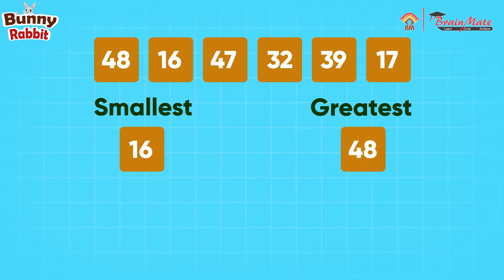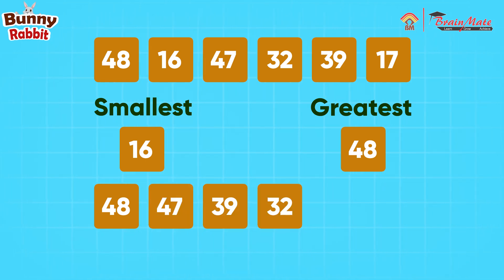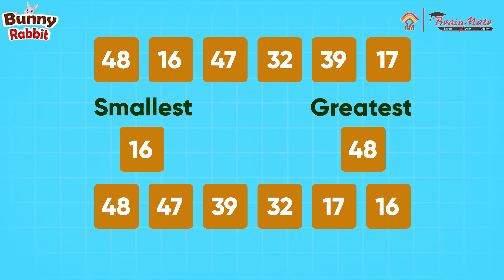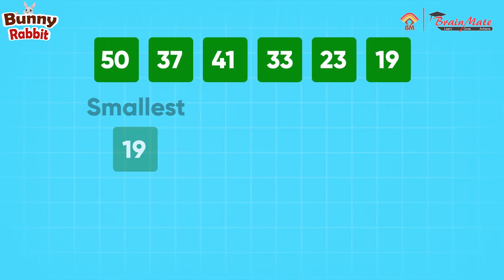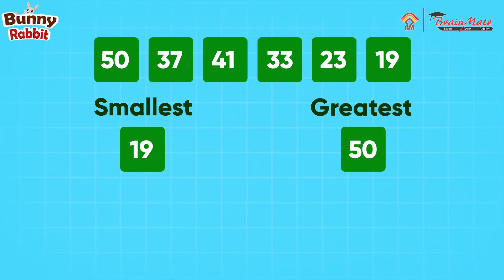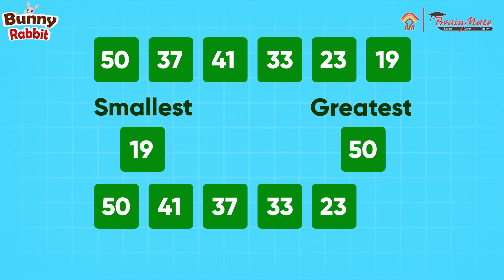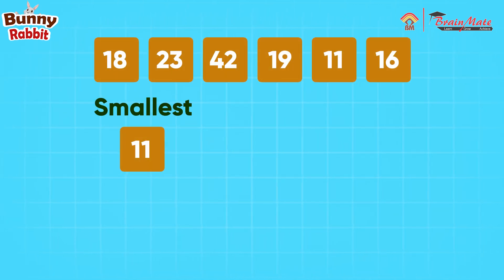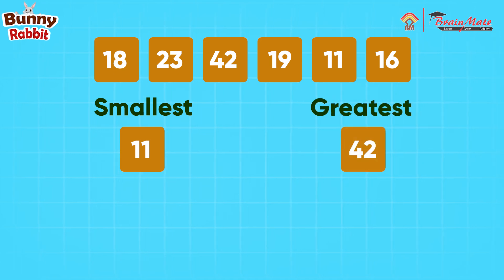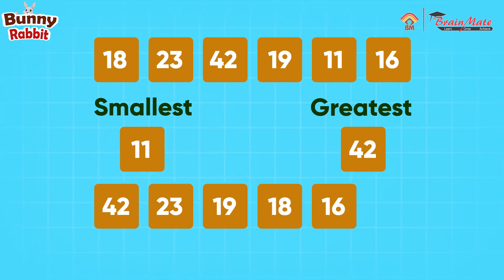Smallest number is 16, greatest number is 48. Descending order is 48, 47, 39, 32, 17, 16. Smallest number is 19, greatest number is 50. Descending order is 50, 41, 37, 33, 23, 19. Smallest number is 11, greatest number is 42. Descending order is 42, 23, 19, 18, 16, 11.